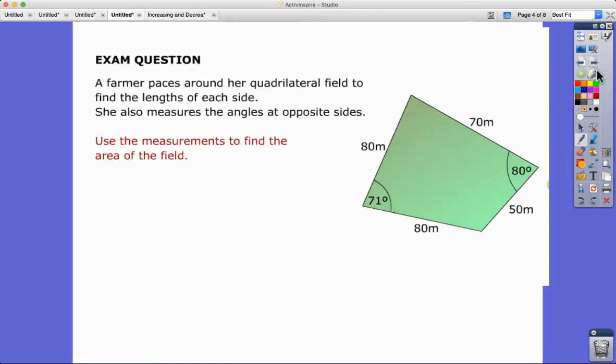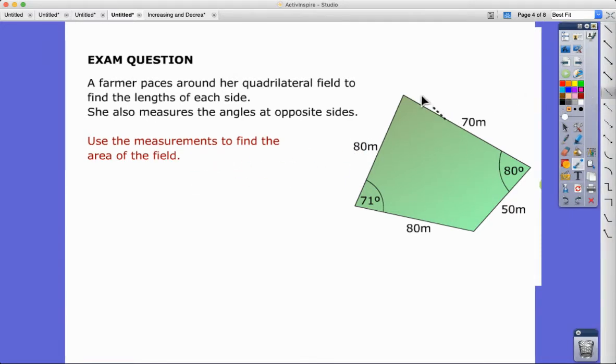Exam question, it's a bit more involved. A farmer paces around her quadrilateral field to find the lengths of each side. She also measures the angles at opposite sides. Use the measurements to find the area of the field. We're looking at this—the title of this lesson is the area of a triangle using trig. We have some angles there, there's no triangles though, but we can actually create some triangles by drawing a line. There we go, now we have two triangles.